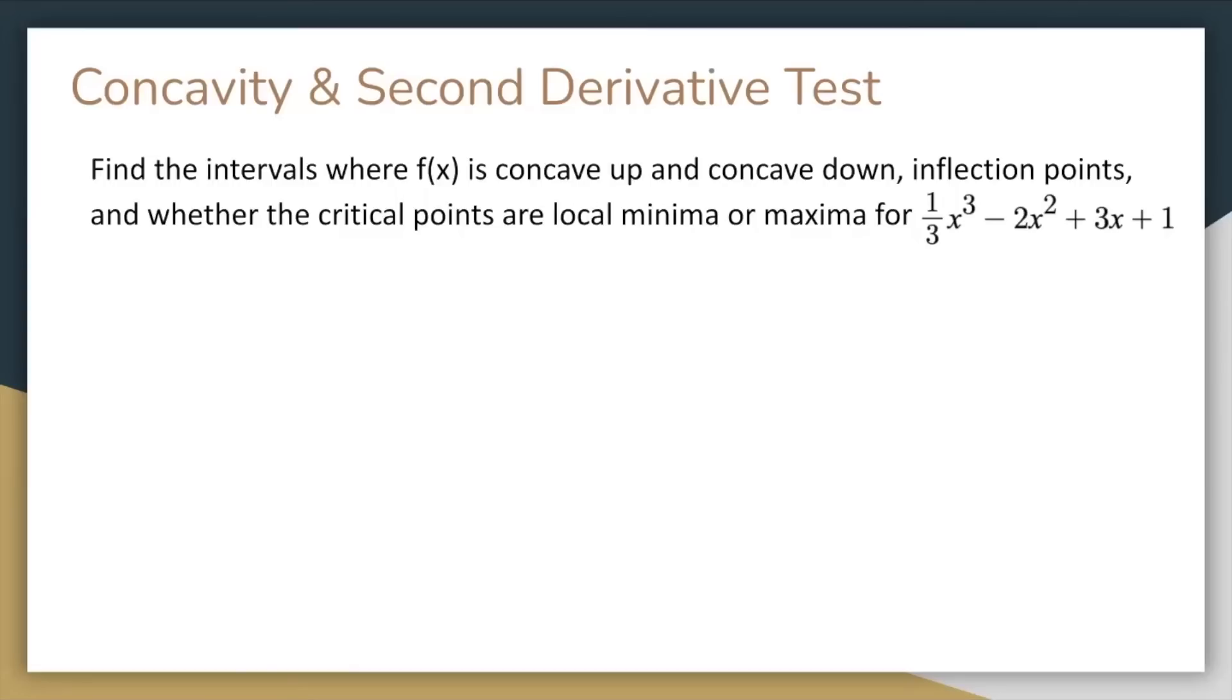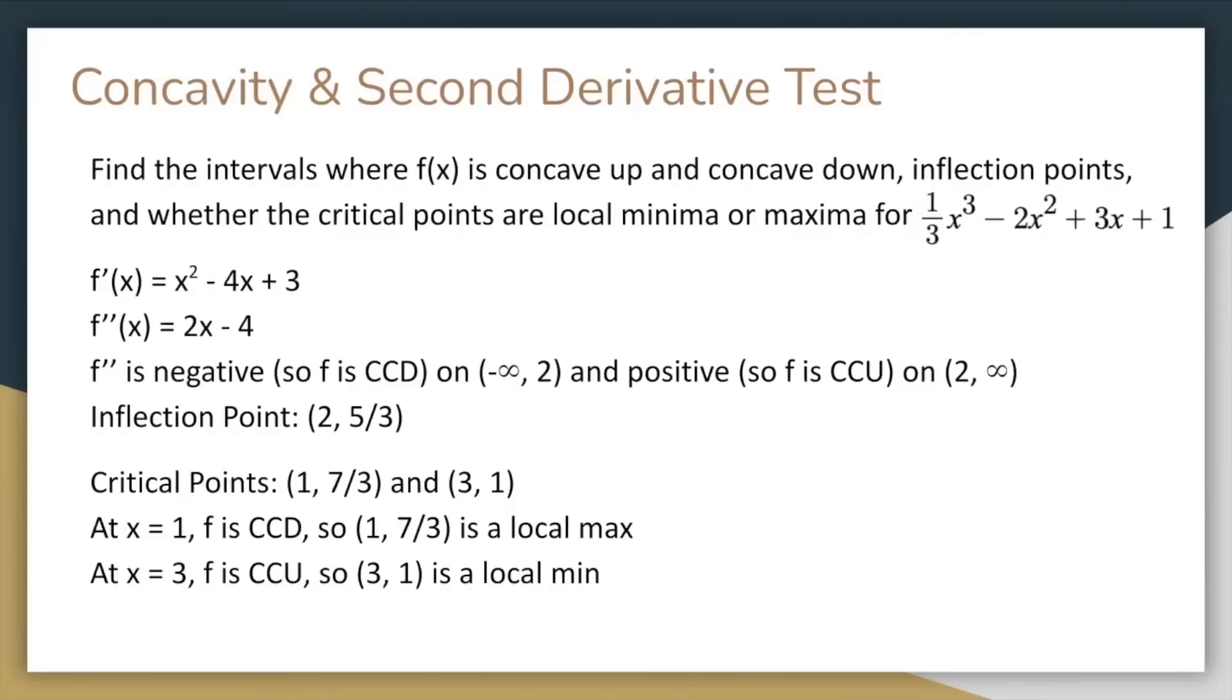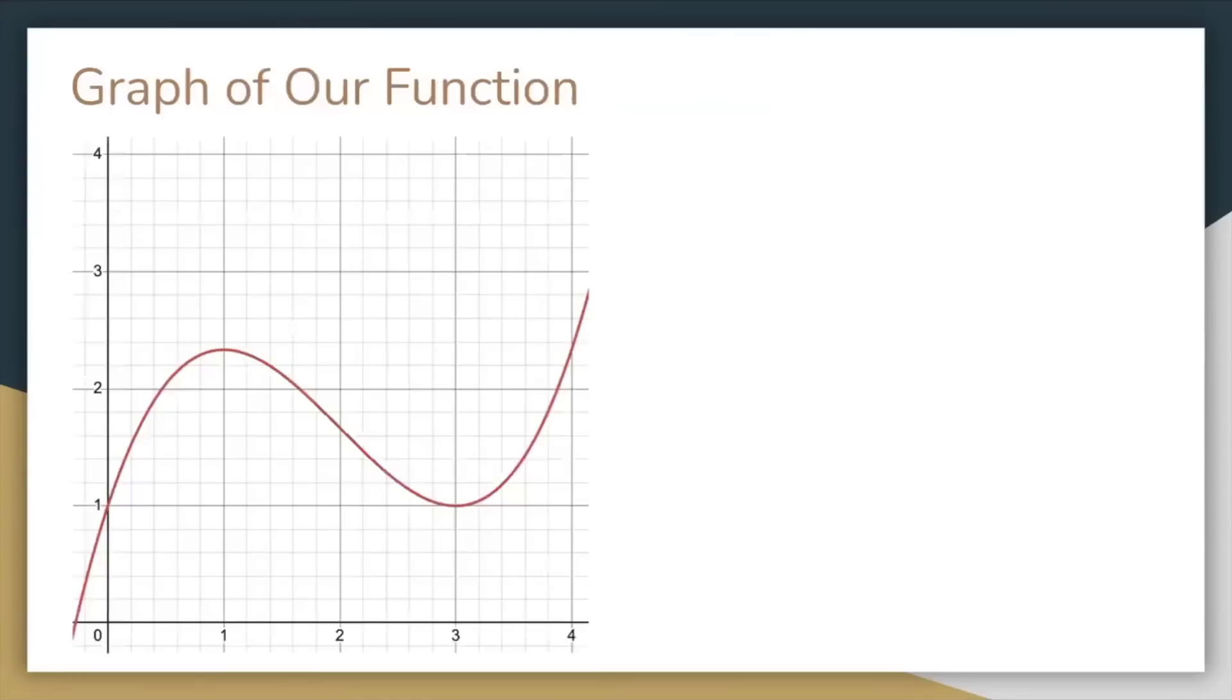To determine concavity, you solve for the second derivative of f, and on intervals where it's negative, f is concave down, whereas on intervals where it's positive, it's concave up. The inflection points are where f double prime changes sign. To determine whether a critical point, which we found all of them in the last slide, is a local minima or maxima. If the graph is concave down on the interval where the critical point lies, it's a local maxima, whereas if it's concave up, it's a local minima. And here's a graph of our function in case you want to verify all our results are correct.